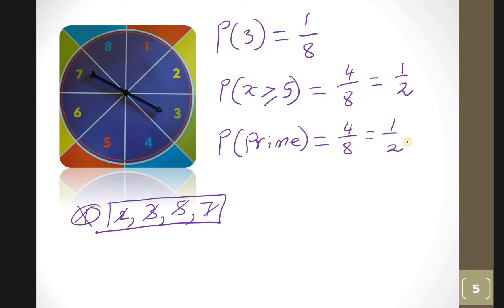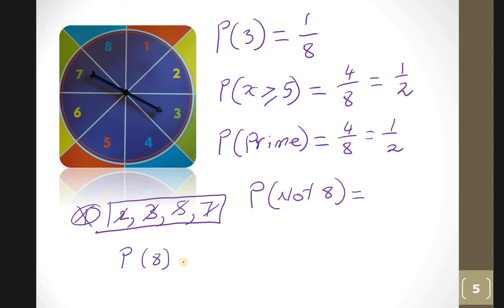What is the probability of not getting an eight? Using complementary probability: the probability of getting an eight is one out of eight. So not eight equals one minus one eighth, which is seven eighths. Or simply count one through seven — those are not eight — so seven out of eight.